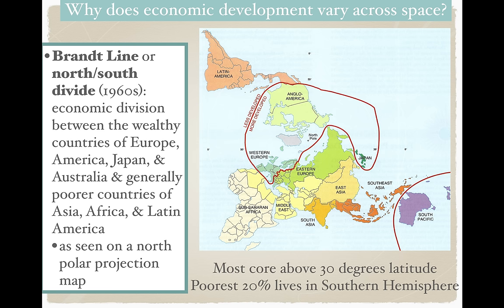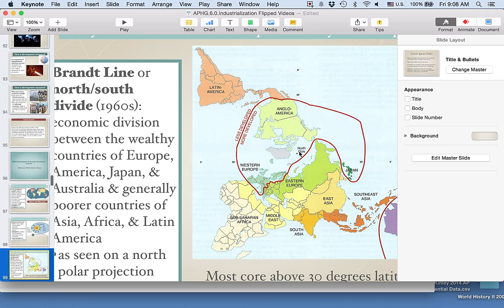There's something called the Brandt Line, or the north-south divide, and I want to revisit this concept of core and periphery. We're looking at a north polar projection map — imagine you're looking at the top of the earth down, with the north pole in the middle.